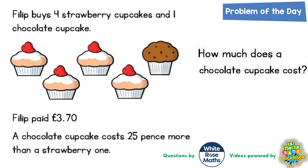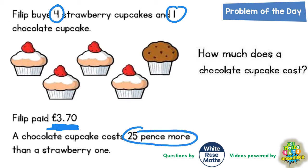Welcome problem-solving fans to another problem of the day, and this one is all about cupcakes — strawberry cupcakes and chocolate cupcakes to be exact. Philip buys four strawberry cupcakes and one chocolate cupcake. Philip paid £3.70, and we know that a chocolate cupcake costs 25 pence more than a strawberry one. We've got to figure out the cost of a chocolate cupcake.